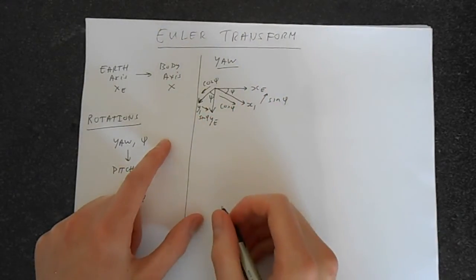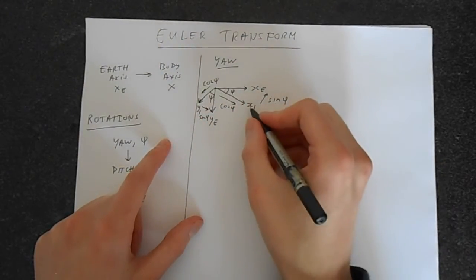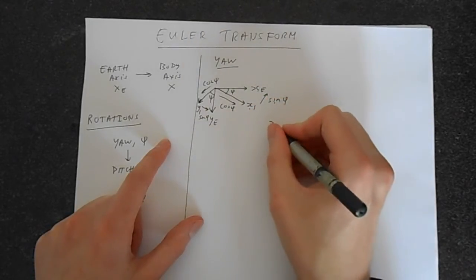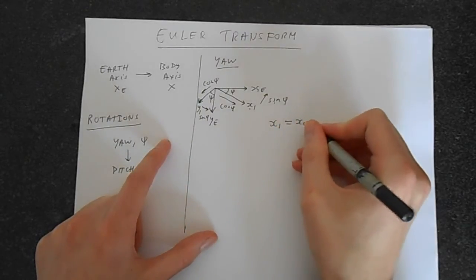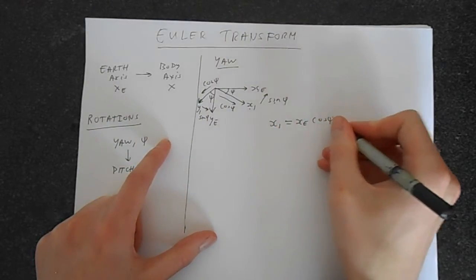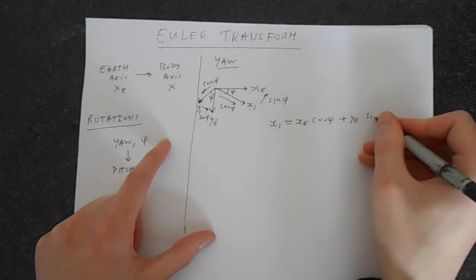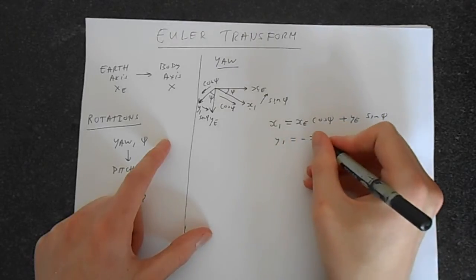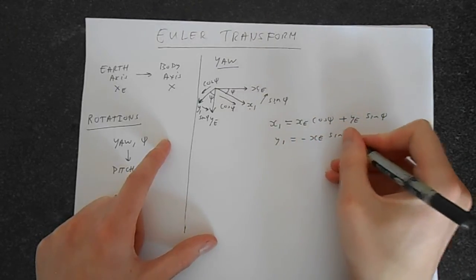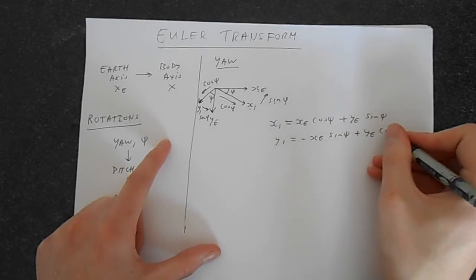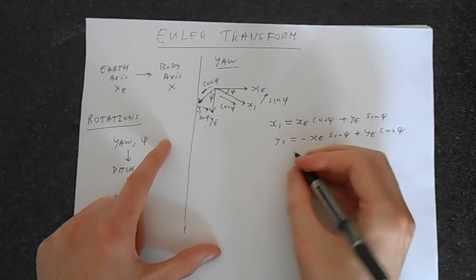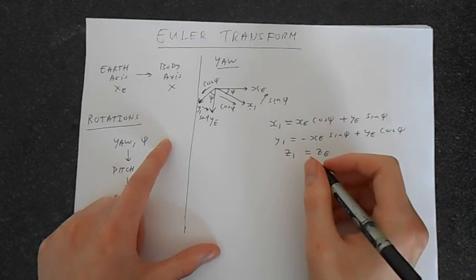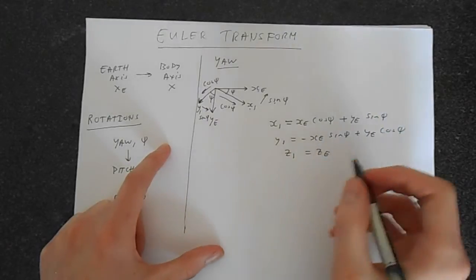Now we can of course write X1 in terms of sine and cos of XE. So we could say that X1 is equal to XE cos φ plus YE sine φ. Y1 equal minus XE sine φ plus YE cos. And we've not changed Z. So Z1 is simply ZE.